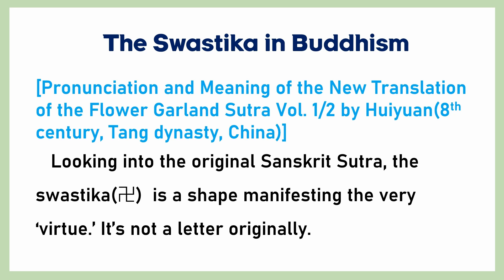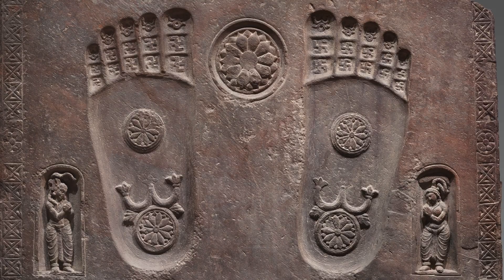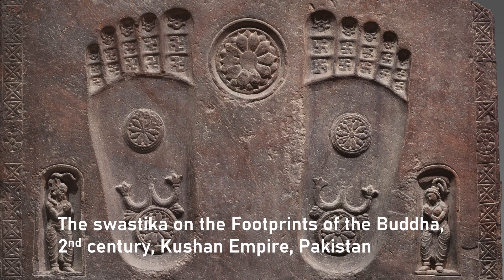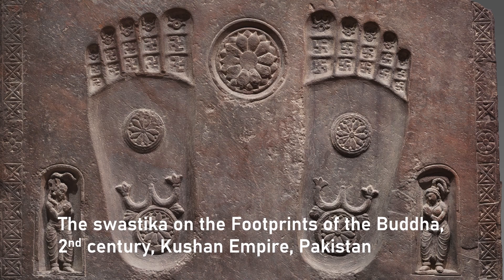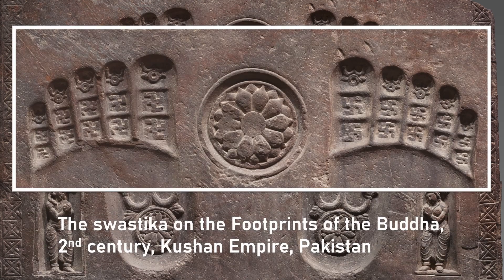Actually, Empress Wu of the Tang Dynasty made the shape of the swastika an official Chinese character in order to promote Buddhism in China. One of the earliest Buddhist examples of the swastika is the footprint of the Buddha, made in the second century during the Kushan Empire. On the toes of the Buddha, the swastikas are carved.